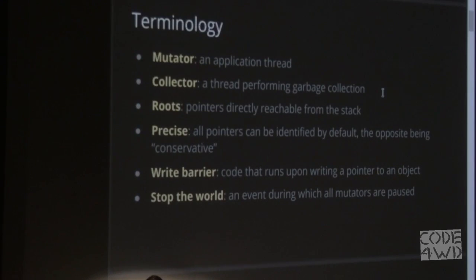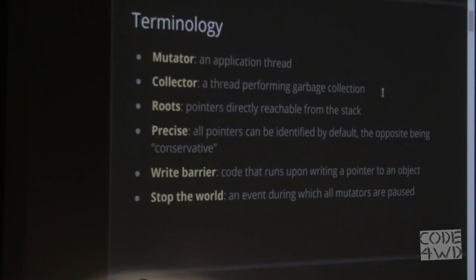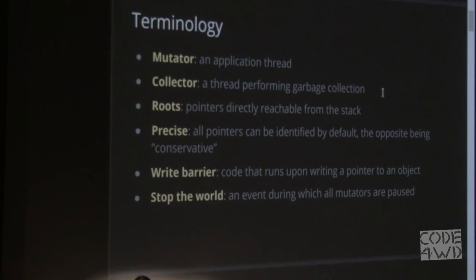One of the reasons garbage collection is difficult is because there are a lot of terms that, if you're not familiar with them, it's confusing what people are talking about, and they're not always properly explained on the internet. The first important term is mutator, which is simply a thread that runs your code. In a language like Go with lightweight processes, those are your mutators. The collector is a thread that performs garbage collection.